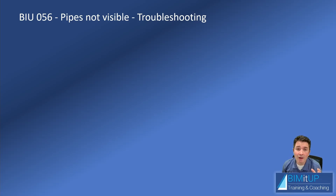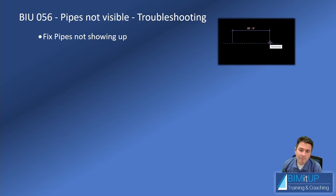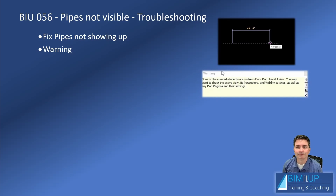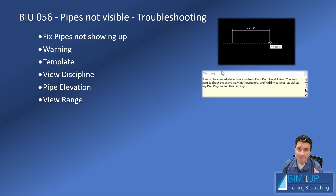Hello everyone. Today I'm going to show you how to fix it when pipes are not visible. We're going to do some troubleshooting so you can systematically go step by step until you get your pipe displaying properly. So you're going about your day, you drop a pipe, no problem — everything's fine — and then this warning: 'None of the created elements are visible in your floor plan view.' So what are we going to check? We'll check template, view discipline, pipe elevation, view range, visibility graphics regarding worksets, categories, and filters.